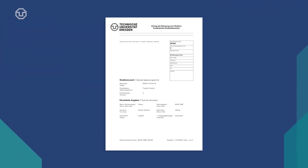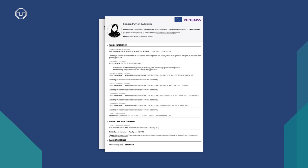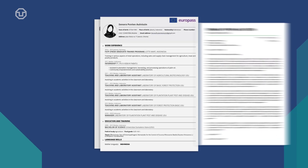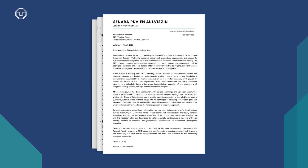First, you will need the TU Dresden application form — you will need to print it, sign it, and scan it as a PDF. Second, you will need your CV in the Europass format, hand signed and dated. You will also need a letter of motivation explaining the reasons for your application, which is also hand signed and dated.